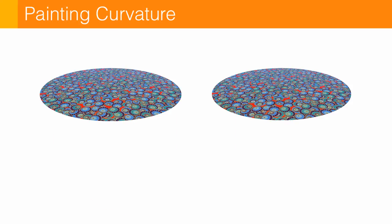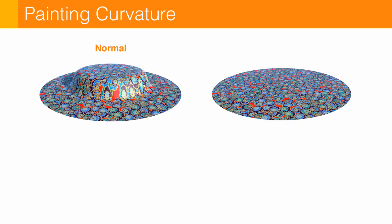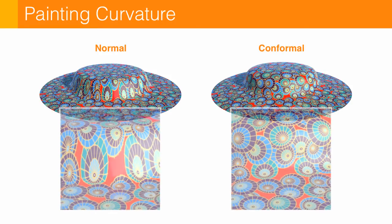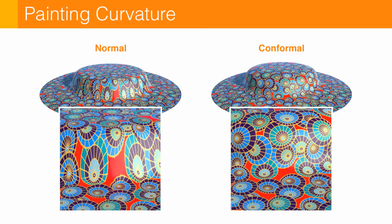Of course, you can do a similar thing with normal displacements. But if you compare with what you get with these conformal displacements, it's going to make a pretty big difference in terms of what happens to the texture.